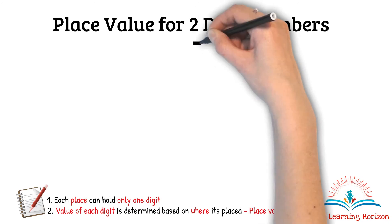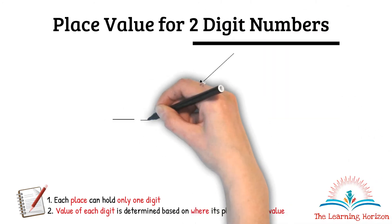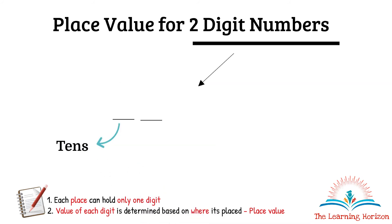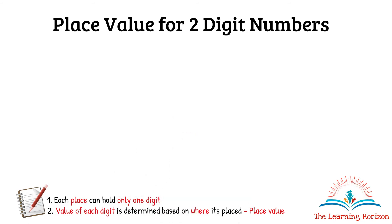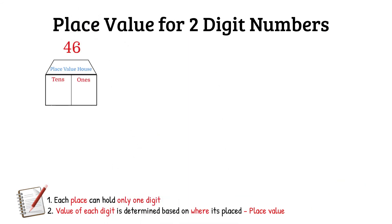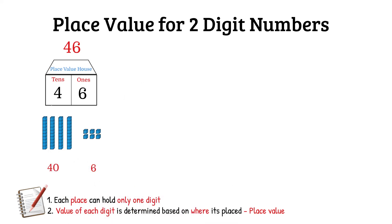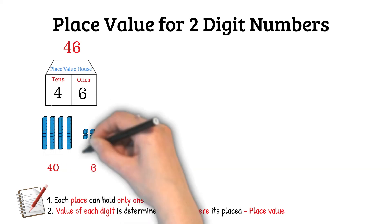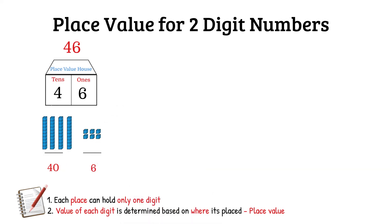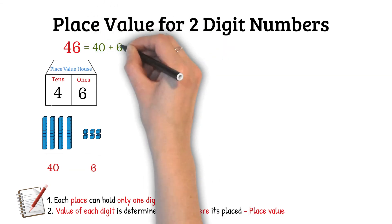Two-digit numbers have two places — this is the place for tens and this is the place for ones. For example, if I take the two-digit number 46, it means I have four tens and six ones. Four tens equals 40, so 46 is equal to four tens and six ones, which is equal to 40 plus 6.